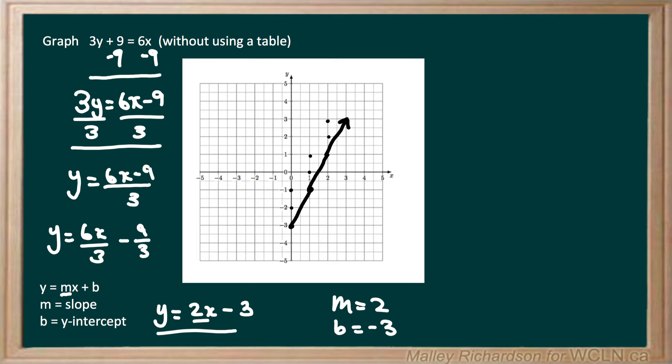Now starting back on our negative 3, we can go down twice and then to the left once. And then again we'll put an arrowhead. So our graph of 3y plus 9 equals 6x looks like this linear line.